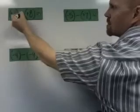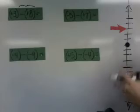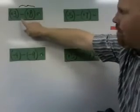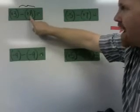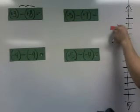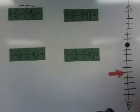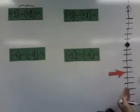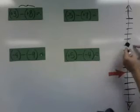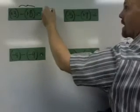When it says subtract positive eight, subtracting positive eight means we are going to take away eight balloons. And if we're going to take away eight balloons, what is that going to cause the basket to do? That's going to cause the basket to go down eight units. And if we go down eight units, that leaves us five units below the clouds — because that's where the clouds are. So that answer is negative five.